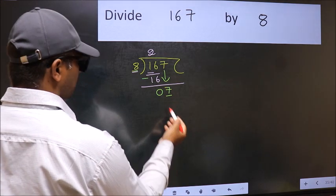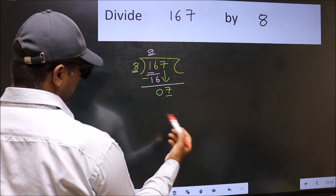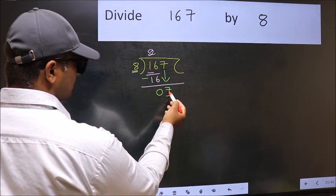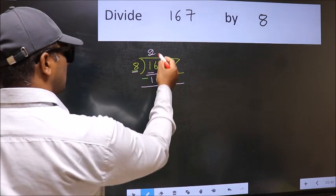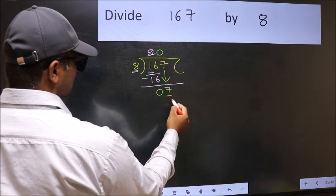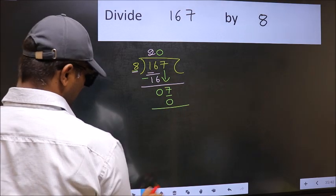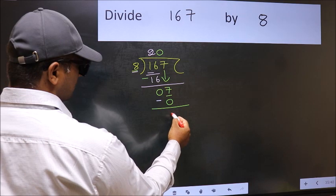If I take 1, we will get 8, but 8 is larger than 7. So what we should do is we should take 0. So 8 into 0 is 0. Now we should subtract: 7 minus 0 is 7.